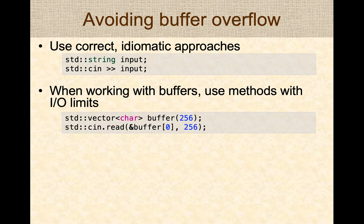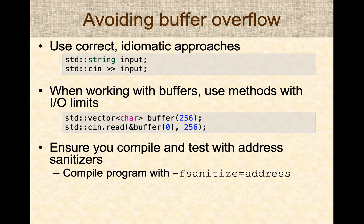It's important to keep those limits in mind. When you're developing, it's a good idea to compile and test everything with address sanitizer. With GCC, you use the '-fsanitize=address' flag. When you compile a program, the address sanitizer automatically runs and catches buffer overflow issues, reporting them as stack traces — memory errors, segmentation faults, and incorrect memory accesses will all be reported.